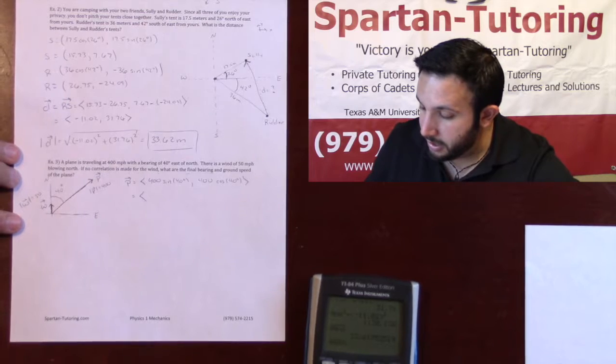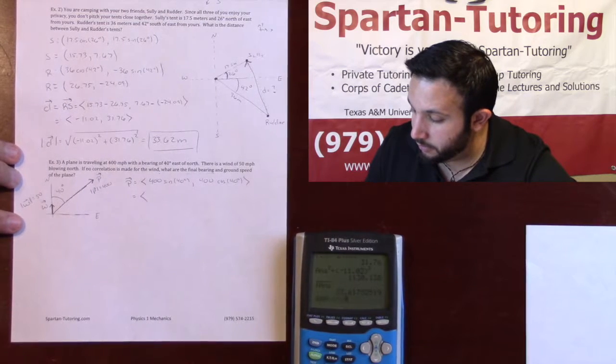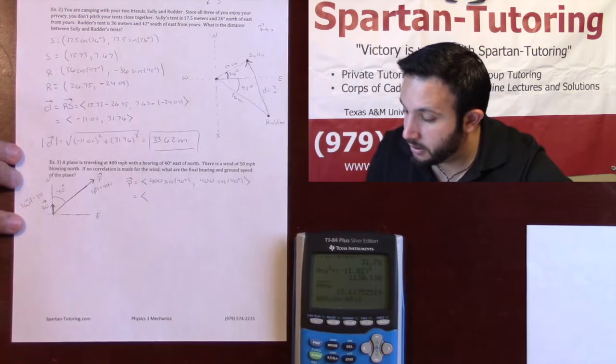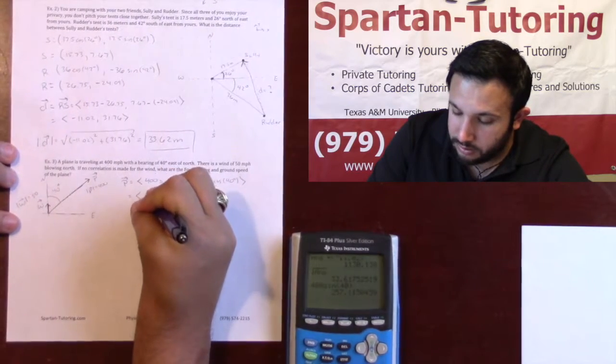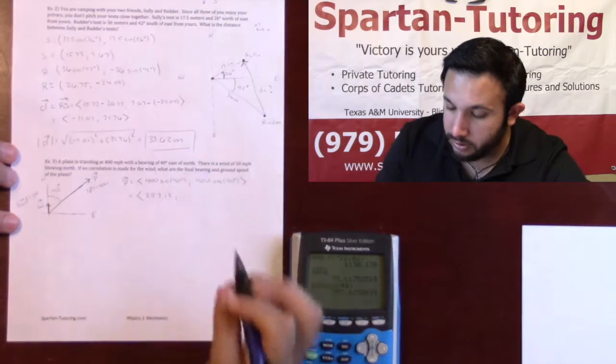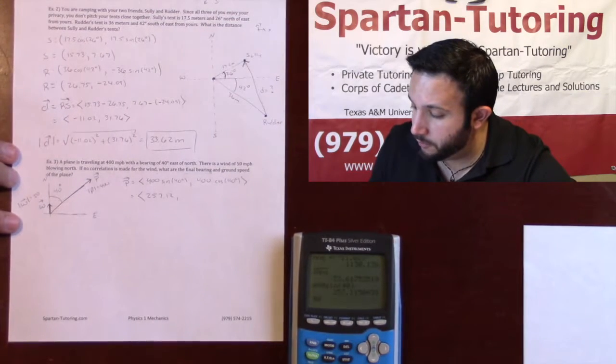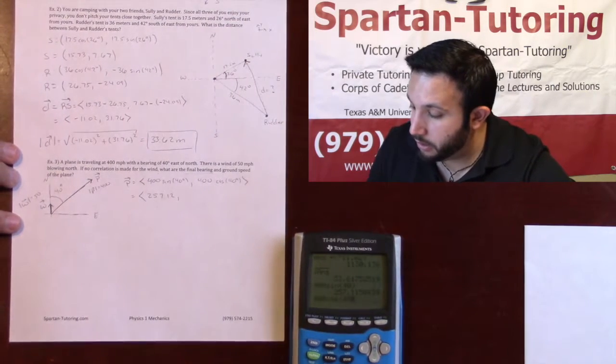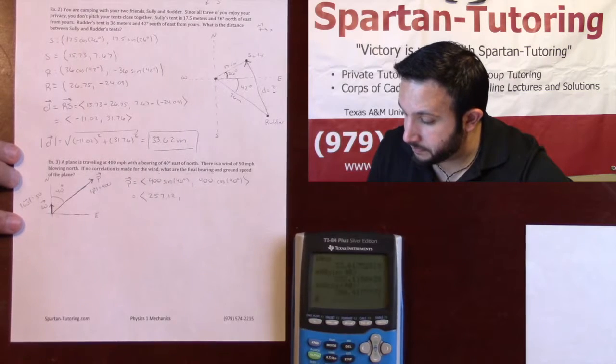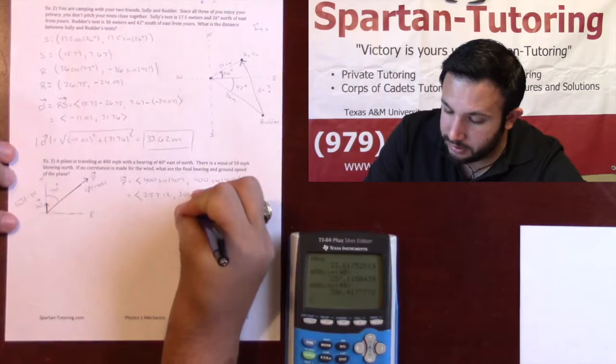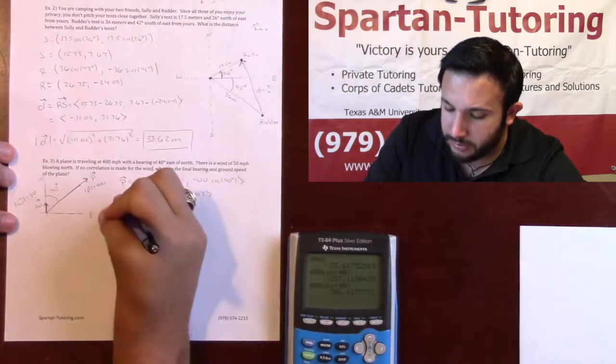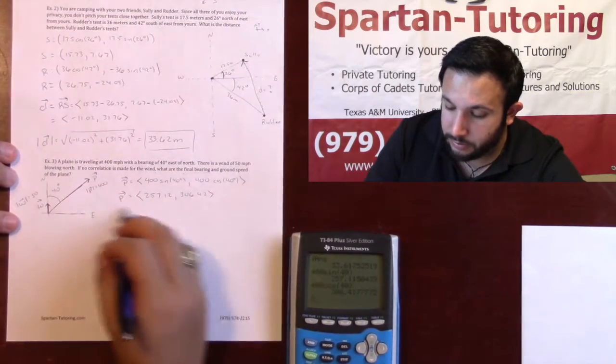So 400 sine of 40 degrees is going to be 257.12. And as for the y component, 400 cosine of 40 degrees is 306.42. So this is my plane vector. We're going to be using this in a sec.